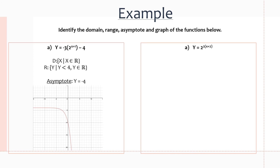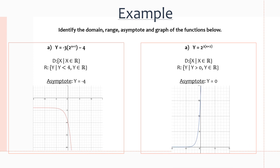y is equal to 2 to the power of 2x plus 2. The domain of this function is x is an element of the reals, and because there's nothing in the y direction transformation-wise, the range just remains y is greater than 0. You can see that the asymptote remains in the exact same position — y is greater than 0 — because there's no transformation applied in the y direction. That's shown in this graph over here. That's actually the end of this video. I hope you guys enjoyed it, and keep watching.